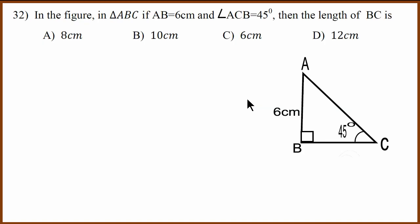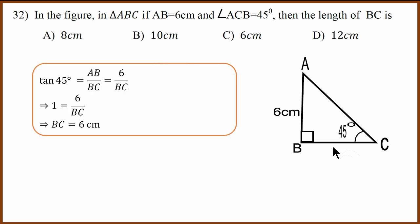32nd question. They have given this angle 45 degree. They have given this side 6 centimeter. They have asked us to find BC. Now because we can use the tan theta we can say that tan 45 equals opposite side by adjacent side. Because tan 45 is 1, it has to be equal. So BC also has to be 6 centimeter.